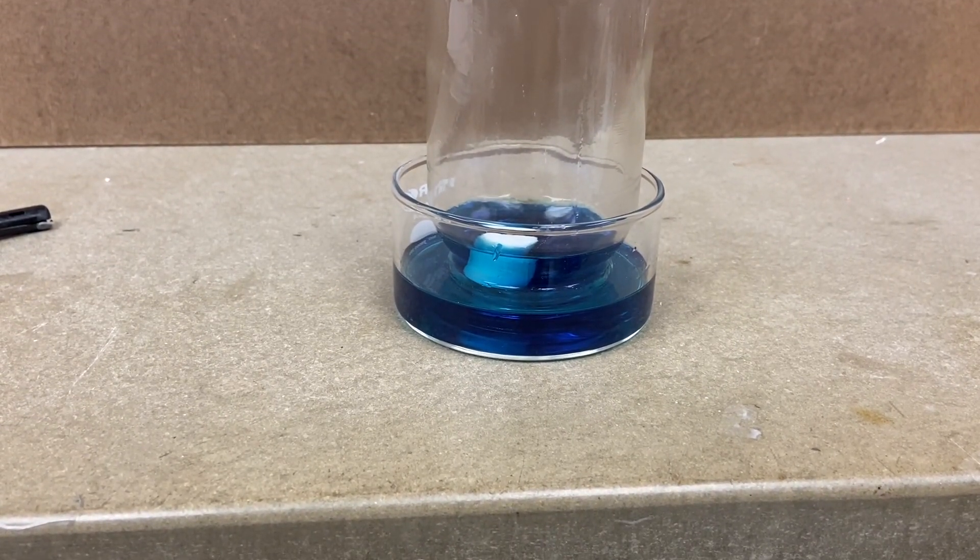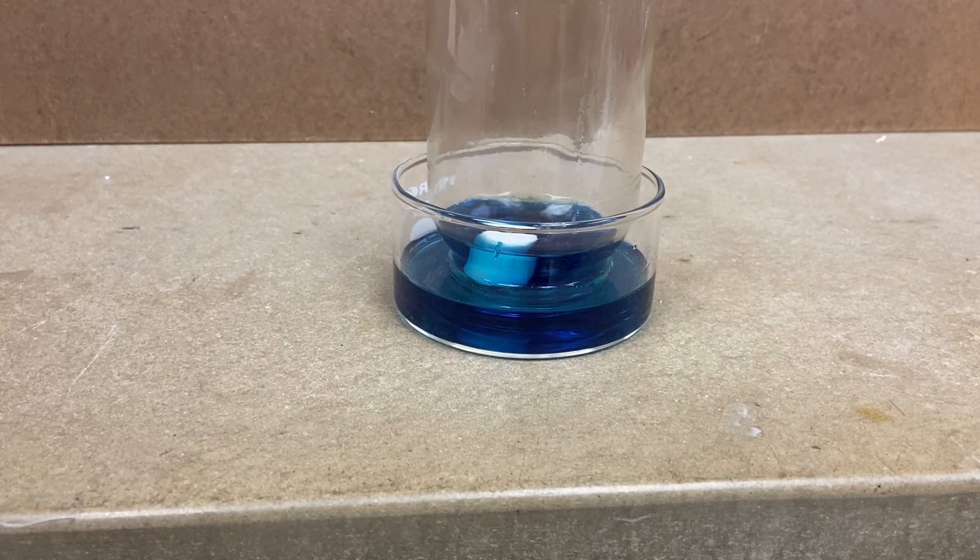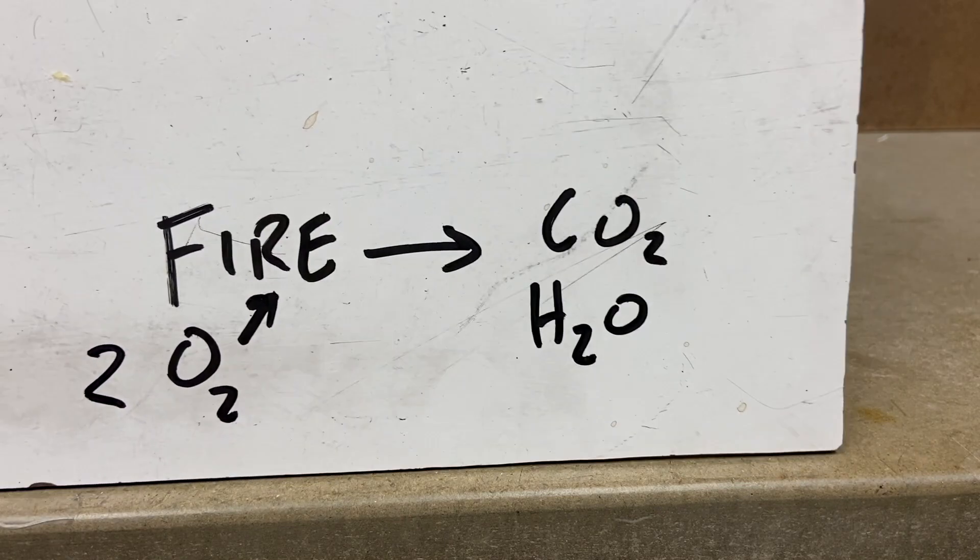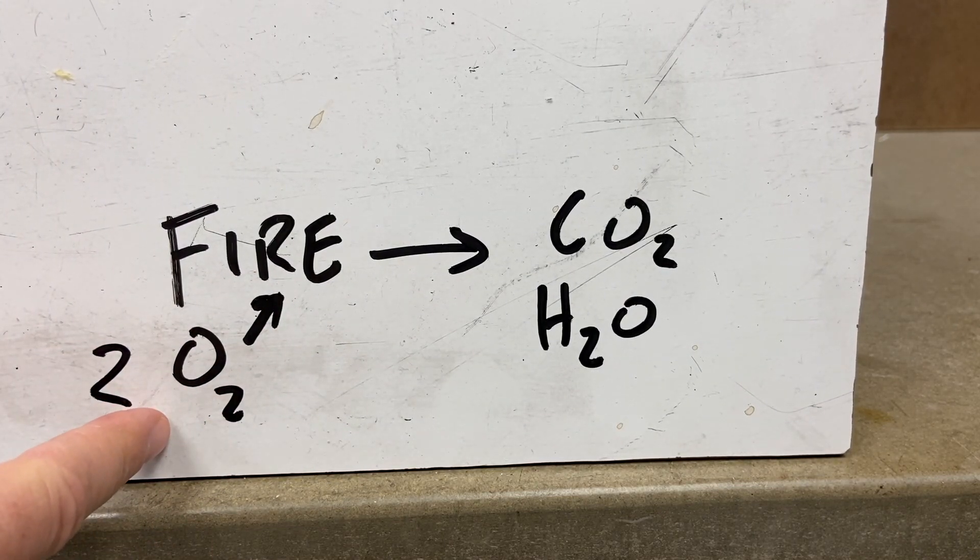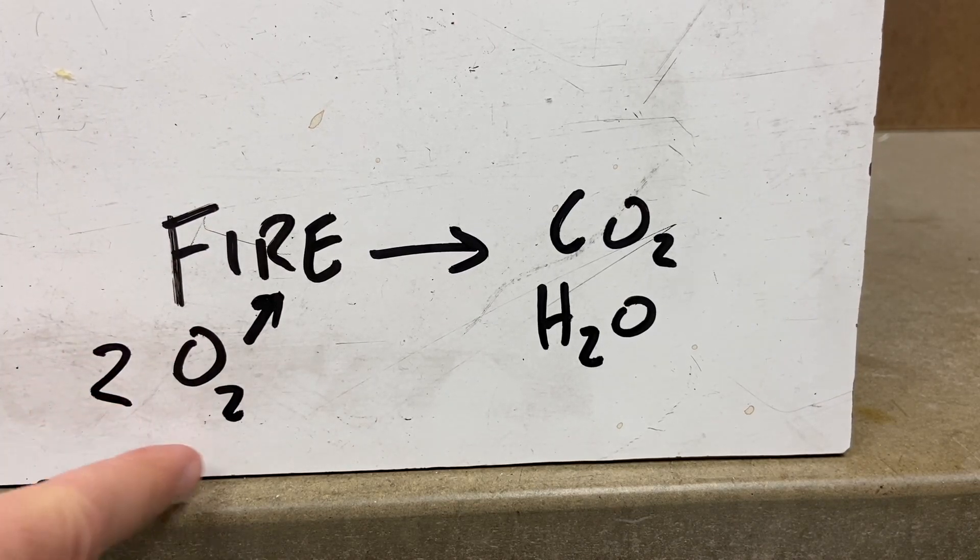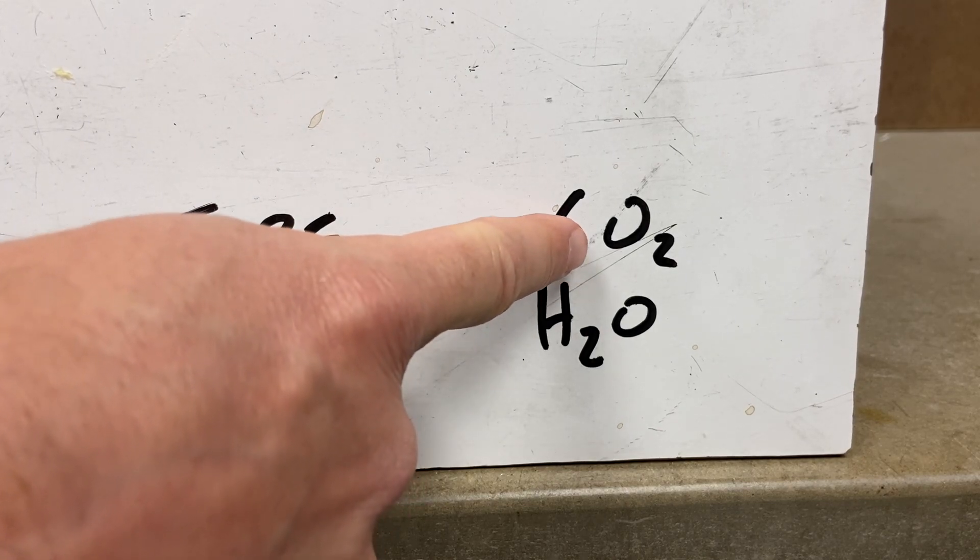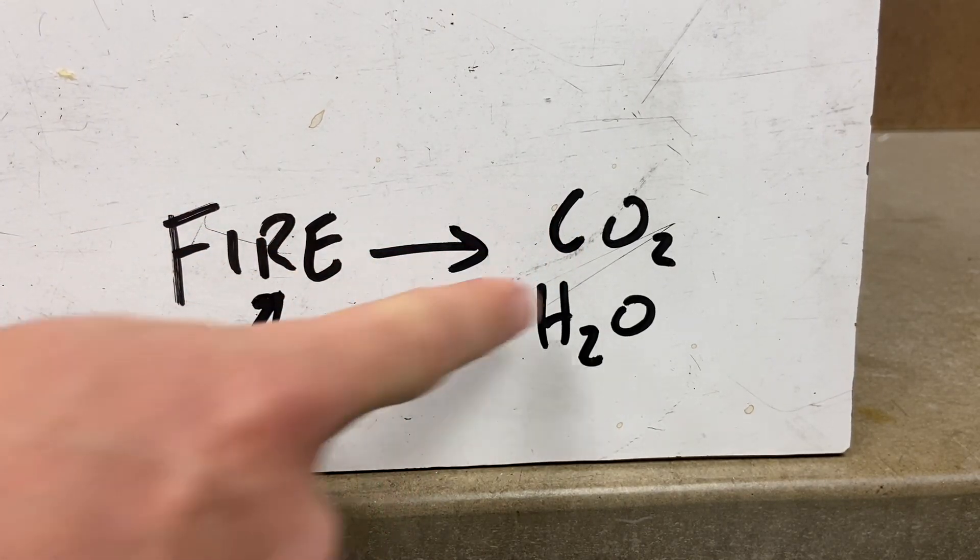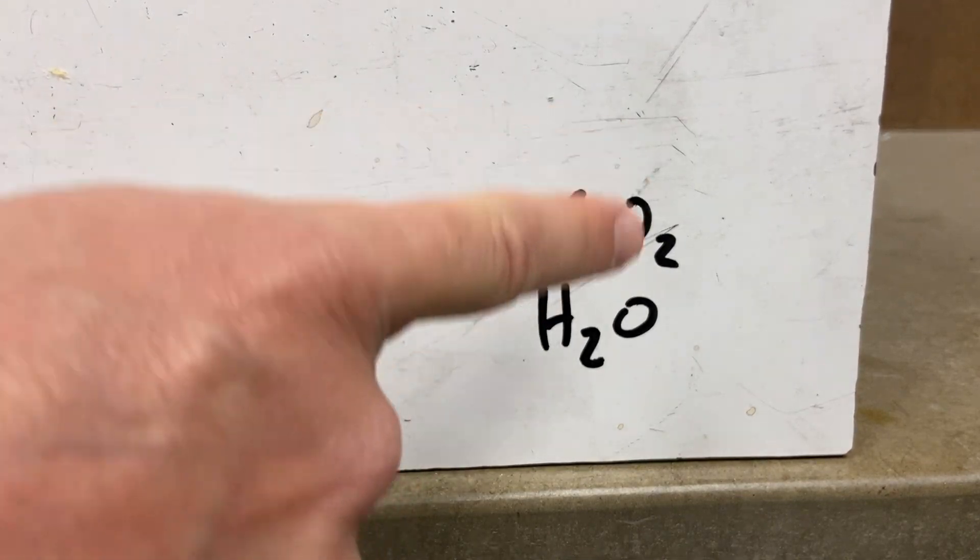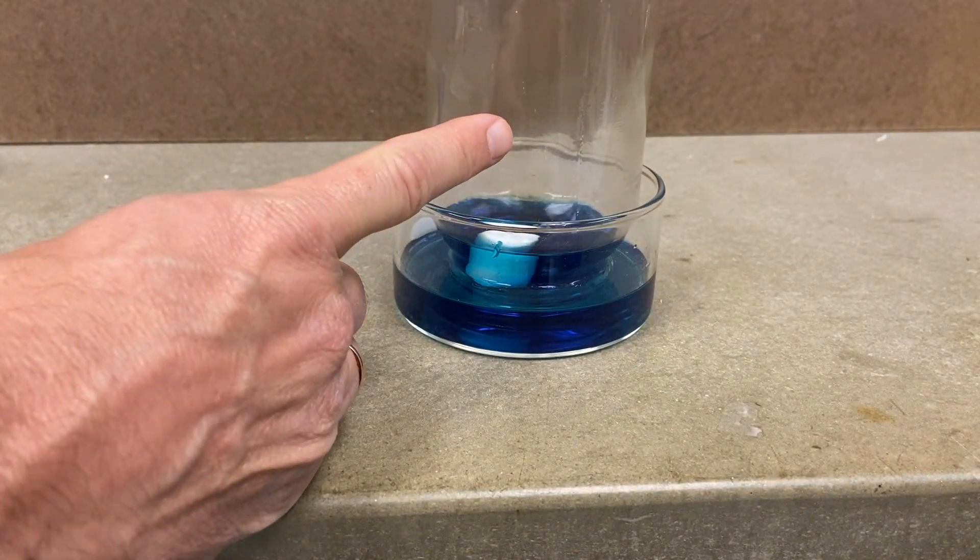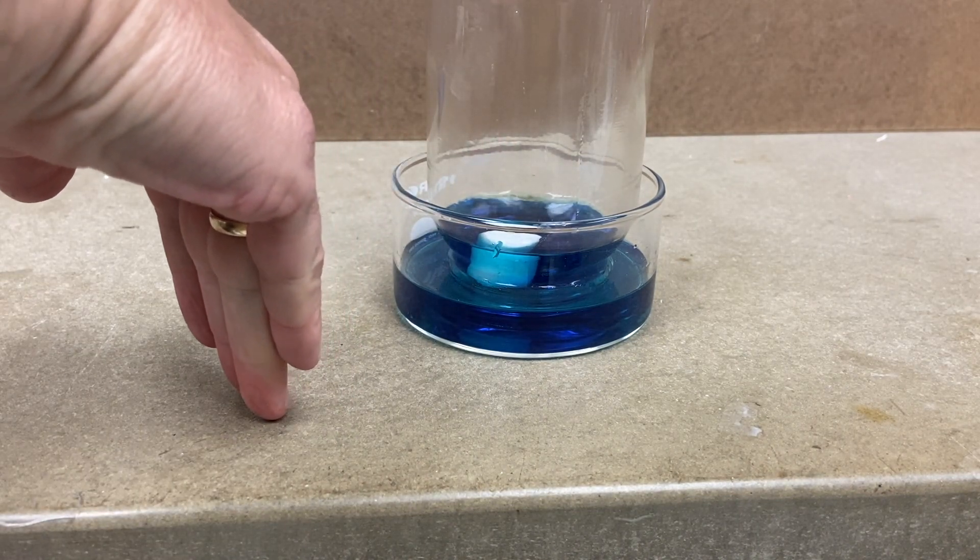Pretty cool, huh? So what's happening here? Fire is a chemical reaction that uses oxygen, and in the process it takes two molecules of oxygen and converts that into one molecule of carbon dioxide. So it actually does produce less gas inside, which reduces the pressure. It's the same as sucking air out. That means the atmosphere pushes it down and the water goes up.